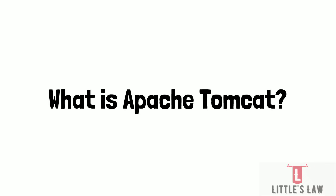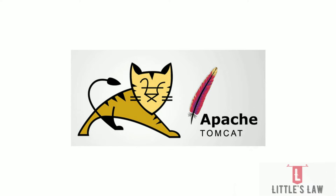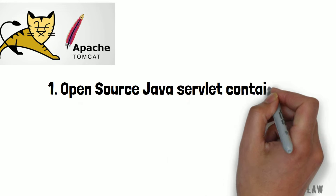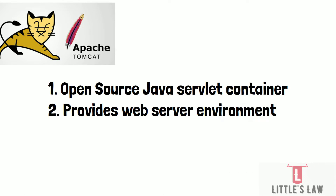So what is Apache Tomcat? Apache Tomcat is an open-source Java servlet container which implements the Java Servlet, Java Server Pages, and Java Expression Language specifications. Apache Tomcat provides a web server environment in which Java code can run, making it an essential component for building and deploying Java-based web applications.